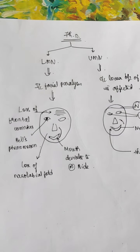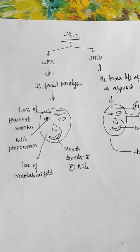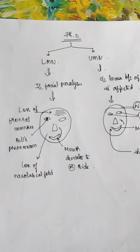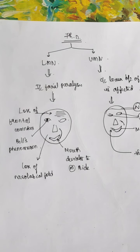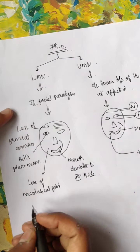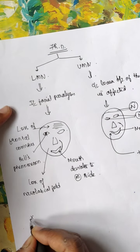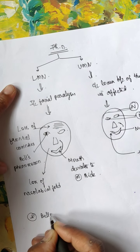Bell's phenomenon occurs when a patient is unable to close his eyes. As they try, the eyeball rolls upward, exposing the conjunctiva below the cornea. So, uprolling of the eyes when the patient is asked to close his eyes is known as Bell's phenomenon.